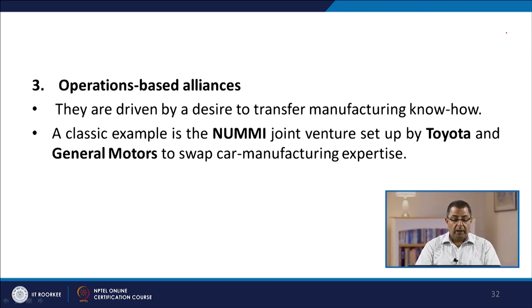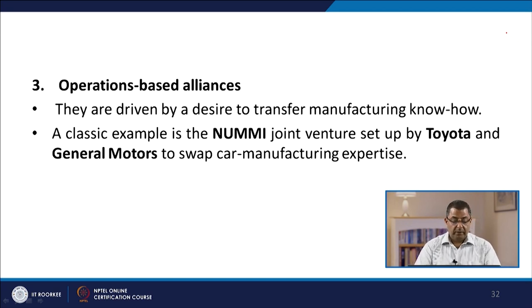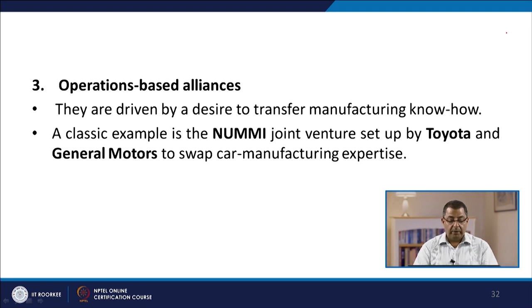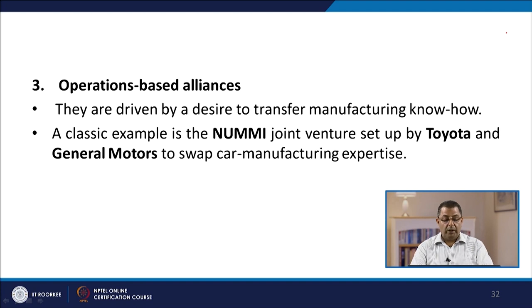Then there are operations-based alliances, driven by the desire to transfer manufacturing know-how. A classic example is the NUMMI joint venture set up by Toyota and General Motors to swap car manufacturing expertise.